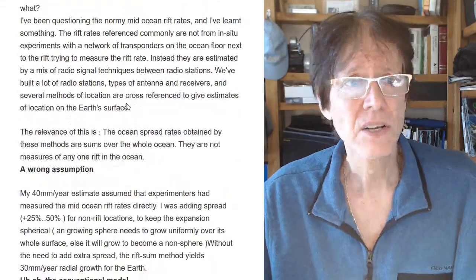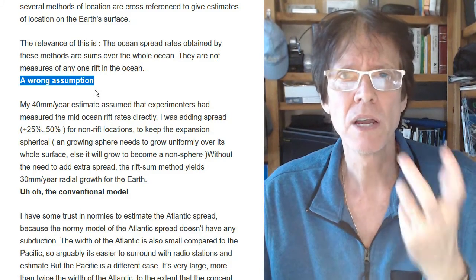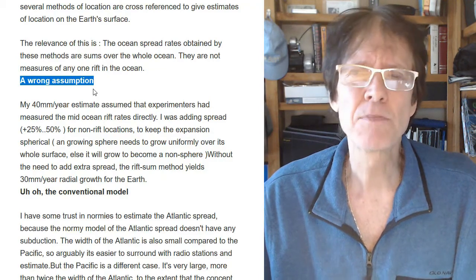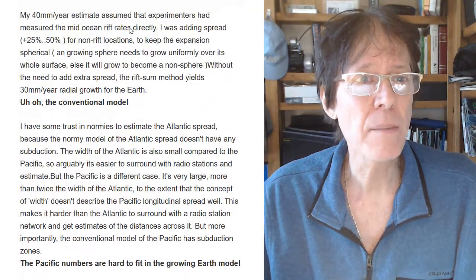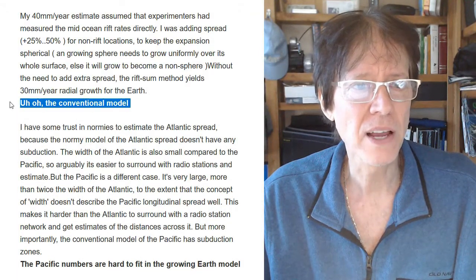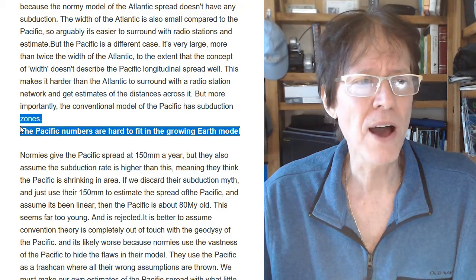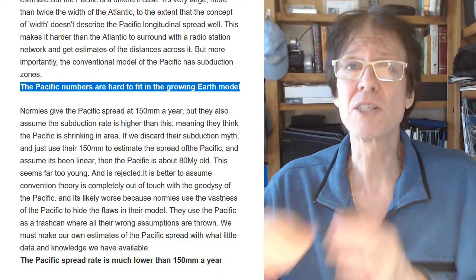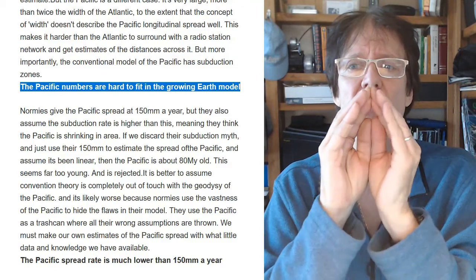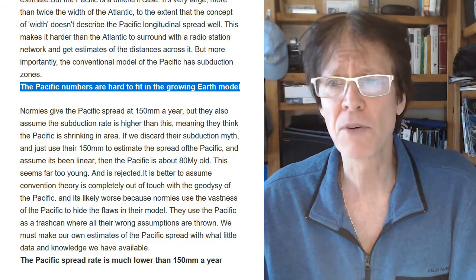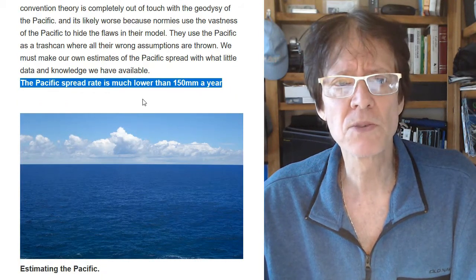There was a wrong assumption he talks about. Assumptions are very important — what are you assuming when you are talking about things? We don't hear assumptions ever, especially in particle physics. He's getting 30 millimeters a year, which is more like a conventional model, but they don't think the Earth is expanding. The specific numbers are hard to fit to a growing Earth model. We know that the Earth is not expanding equally — it basically opened up in stages. The Pacific spread is much lower than 150 millimeters a year.